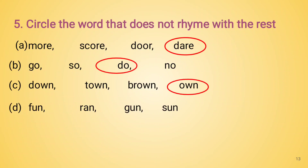Next set: fun, ran, gun, sun. Come on, think and tell me which is the word that is not rhyming with the other words. Yes, the word ran has a different sound. So we will circle the word ran.